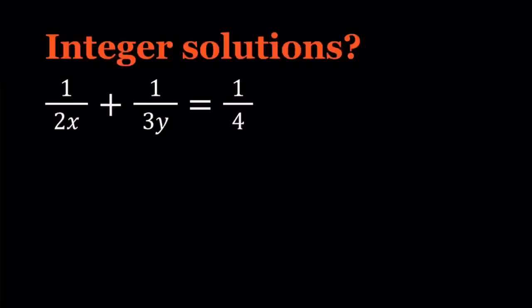Hello everyone. In this video we're going to be solving a Diophantine equation from Romania. We have 1 over 2x plus 1 over 3y equals 1 over 4 and we're looking for integer solutions. So let's go ahead and take a look.